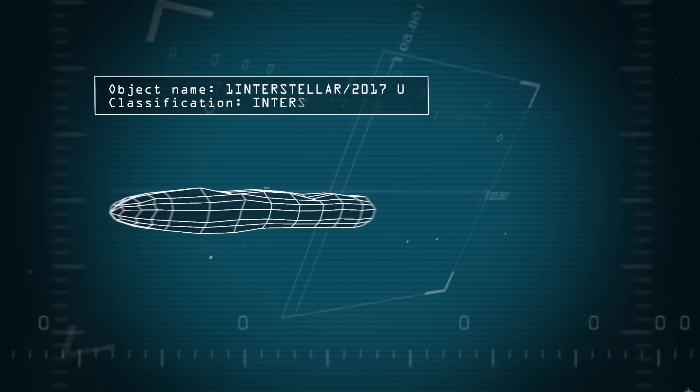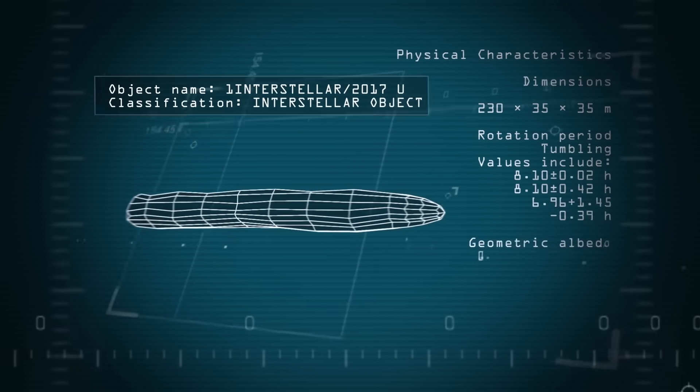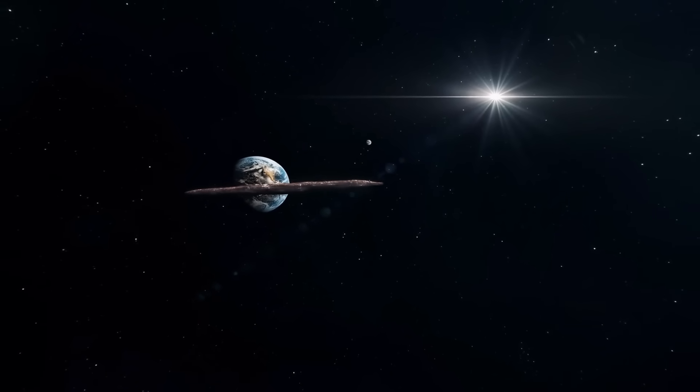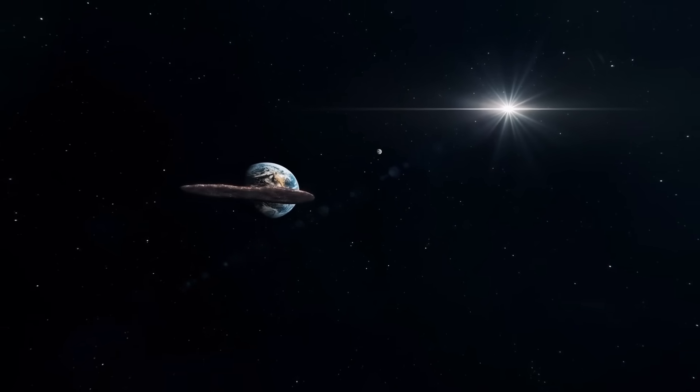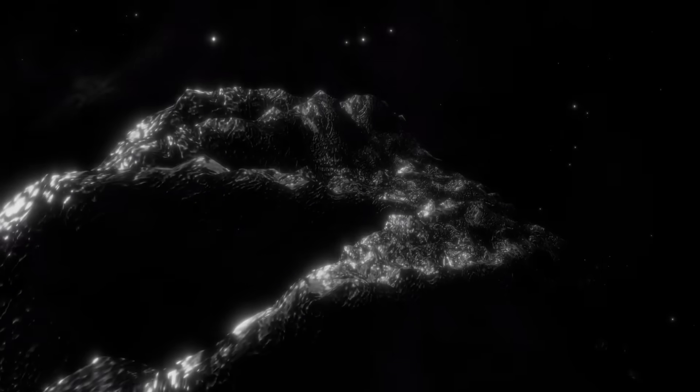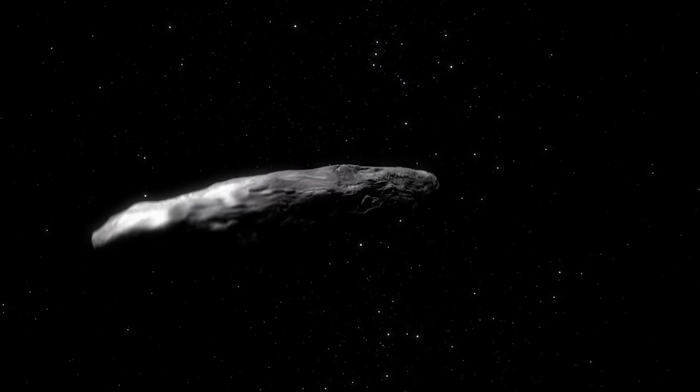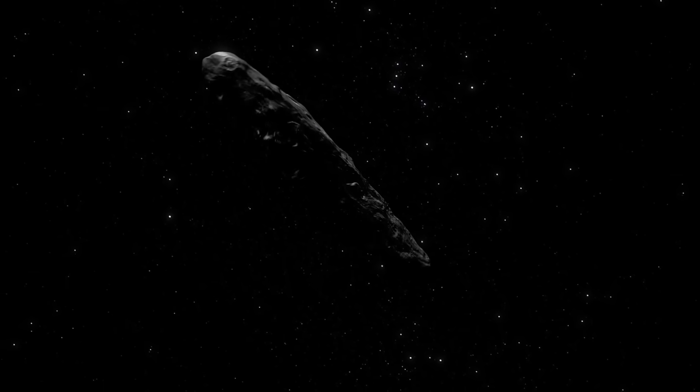The Webb data isn't just a bombshell. It's a direct challenge to everything we thought we knew about how comets form and evolve. Meanwhile, Hubble's Widefield Camera 3 was capturing the most detailed images ever taken of an interstellar comet. On July 21st, Hubble trained its lens on 3I Atlas, zeroing in on its nucleus and the surrounding coma.